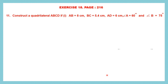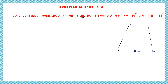So let's draw a rough figure. We have AB here. Let's draw all four sides of a quadrilateral: AB, then BC, then CD and DA. So this is a quadrilateral. Let's write down the measurements: AB is 8 cm, BC is 5.4 cm, AD is 6 cm, angle A is 60 degrees and angle B is 75 degrees. So CD is the side that will be drawn at the end.